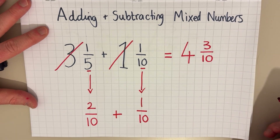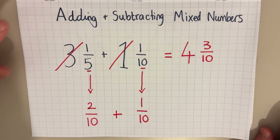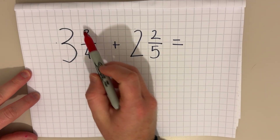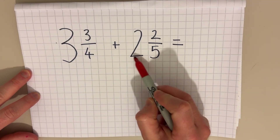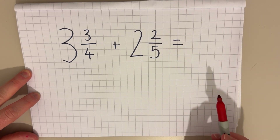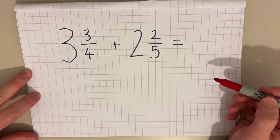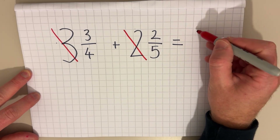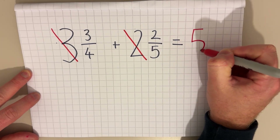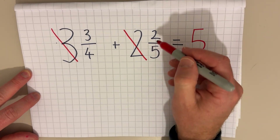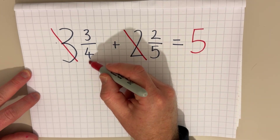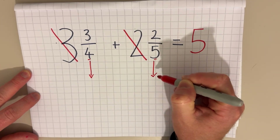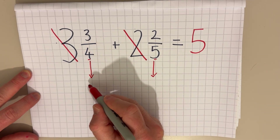If you found that easy, do stick with it because it does get harder. In this next example I've got three and three quarters add two whole ones and two fifths. Just like in the previous question, I'm going to add three and two together to give me five whole ones, and then I'm going to add the fractions. But again they have different denominators.